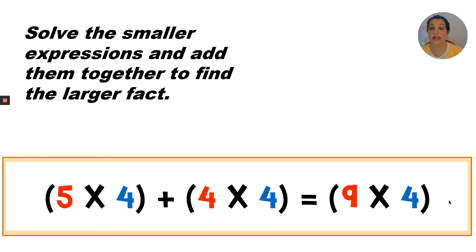Solve the smaller expressions and add them together to find the larger fact. So we need to solve five times four, and we need to solve four times four, and then add them together to find the product of nine times four. So let's try five times four first. Four, eight, twelve, sixteen, twenty. Five times four is twenty. What's four times four? Four, eight, twelve, sixteen. Four times four is sixteen.